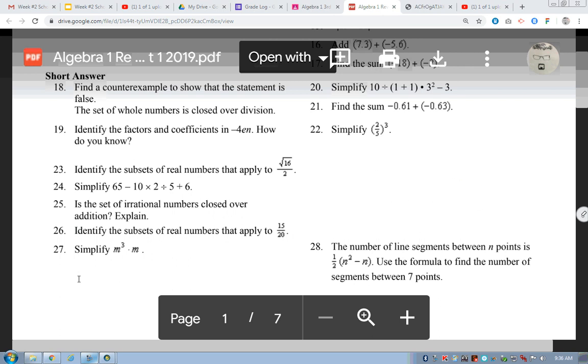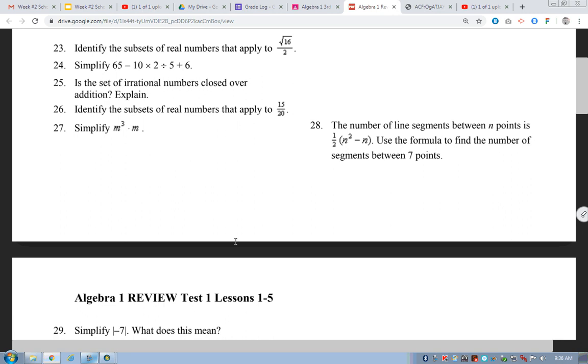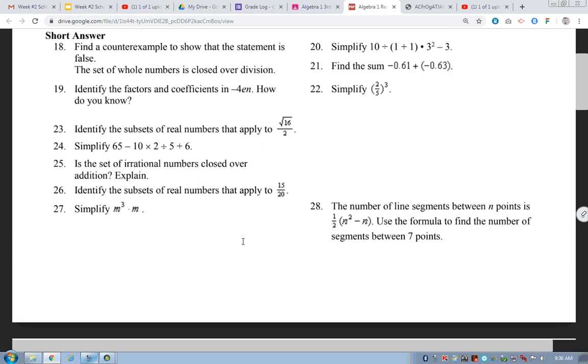Alright. So, that's 23, 25. Who was 28? Okay? Cadence was 28. Okay? 28. The number, I guess we can do that. The number of line segments between endpoints is one-half parentheses n squared minus n. We want to use the formula to find the number of segments between seven points. Okay? So, points, this is where we substitute, okay,